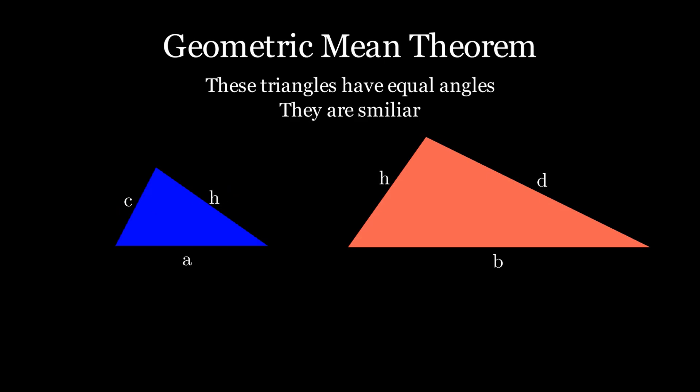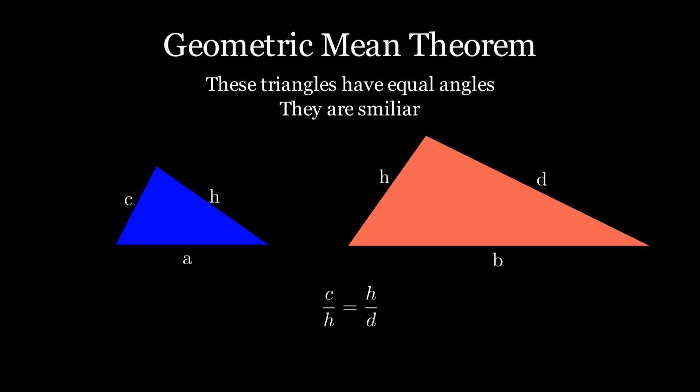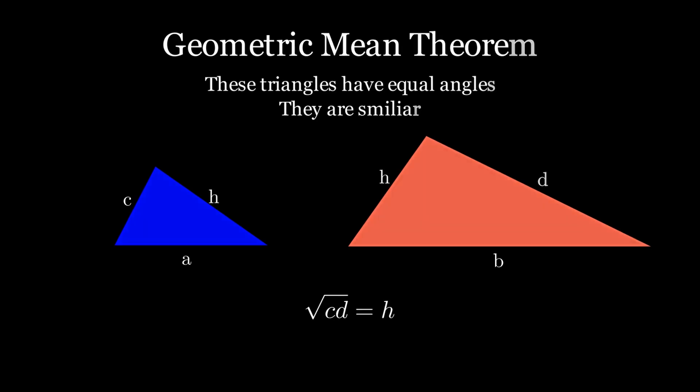Mathematically, we can express this as c over h is equal to h over d. Cross-multiplying, we get that h squared equals c d, so h equals the square root of c d. That's why this is true.